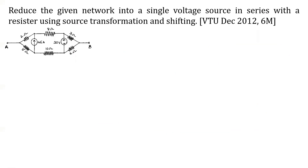We will reduce the given network into a single voltage source in series with resistance using source transformation and shifting. This was asked in a video examination on December 12 for six marks. The first step is to identify whether any current source is in parallel with a resistance, or any voltage source is in series with a resistance — that is not available here.